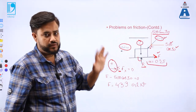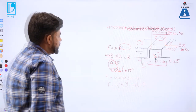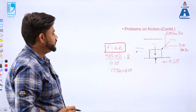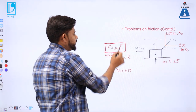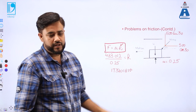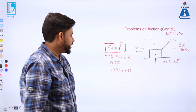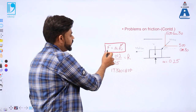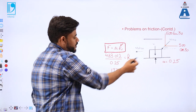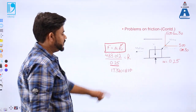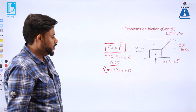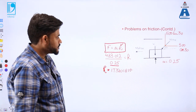To find W, we also need the normal reaction R. Using the friction formula F = μR: F is 433.012, divided by μ = 0.25, which gives R = 1732.018 Newton. Now I will apply the equilibrium condition for all forces in the vertical direction.